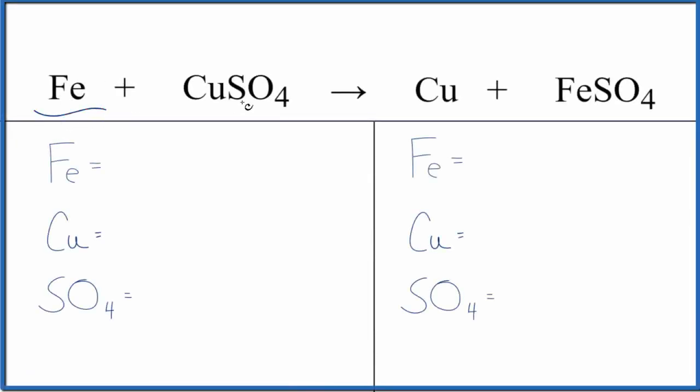Let's balance the equation for Fe plus CuSO4. We have iron metal plus copper 2 sulfate. We'll balance the equation, look at the type of reaction, then write the states in.